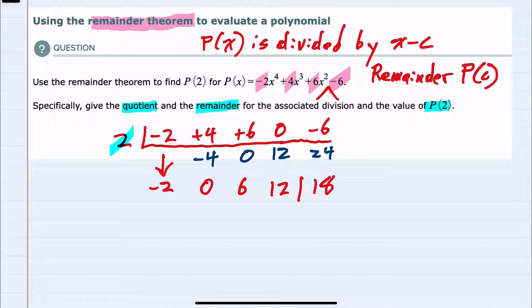As the result of our synthetic division that last digit here, 18, will be my remainder. And everything to the left will be the coefficients, and at this point we have decreased the initial degree of 4 by 1. So my highest degree here is going to be 3.